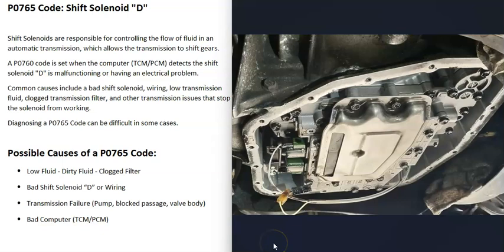The next possible cause is something failing inside the transmission that's stopping the shift solenoid D from working correctly. This could be a bad pump, a blocked passage where fluid needs to flow, or a bad valve body. Basically, there might be no problem with the solenoid itself, but something else inside the transmission is stopping it from working — some kind of broader transmission failure.